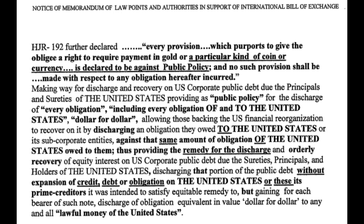Nobody can demand any certain species of currency because of the abrogation of the gold clause. Gold is no longer allowed — they can't even demand real money. All we can do is discharge debts — there are only credits and debits. If you attempt to discharge an obligation with your instrument and they refuse, UCC 3-104 says that payment is tendered whether they like it or not and the debt is discharged.